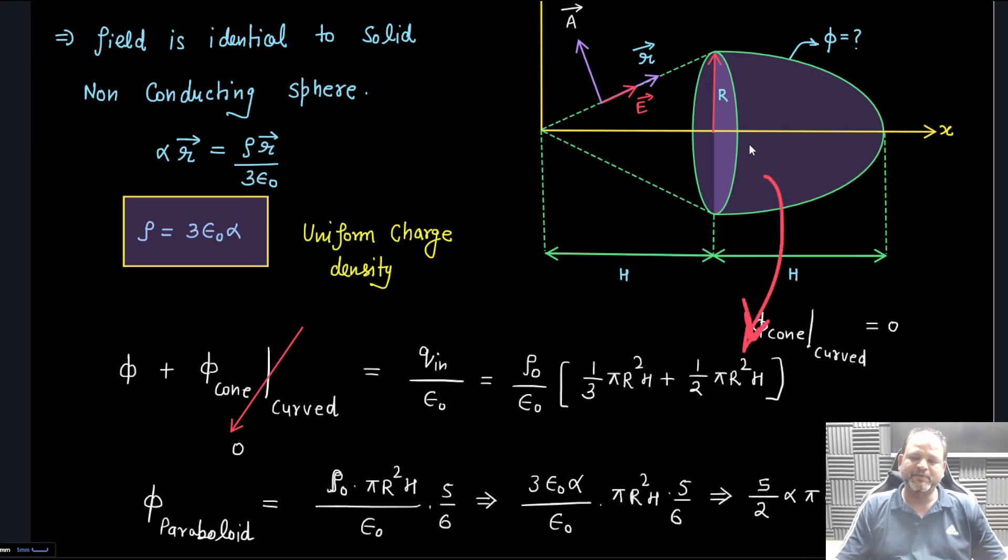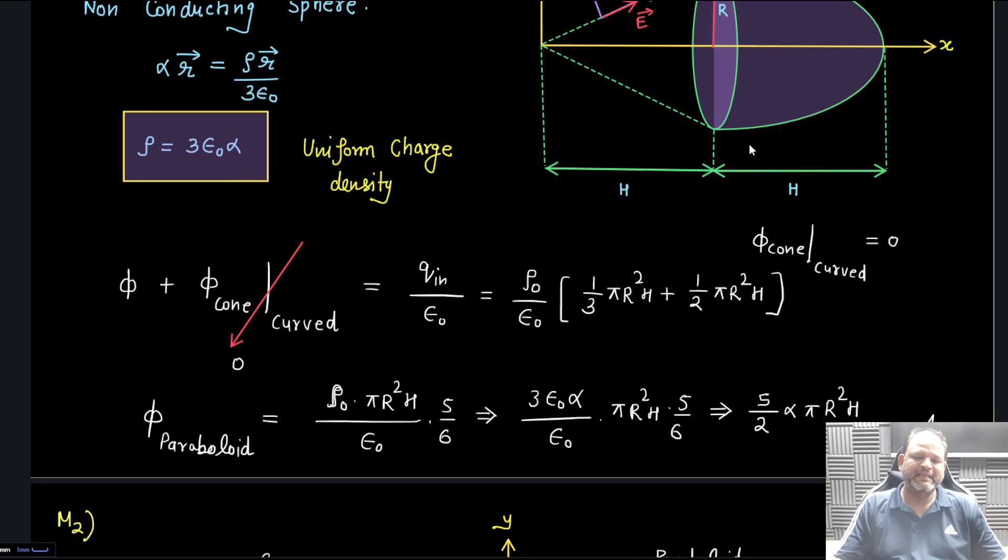This is where basic maths comes into play and it is such a simple question. When you simplify this, you get (5/6)πρ₀r²h/(πε₀). Then you substitute the value of ρ₀ into this and simplify - you get (5/2)απr²h. This is the answer for this problem. This is the smart way of solving this question.